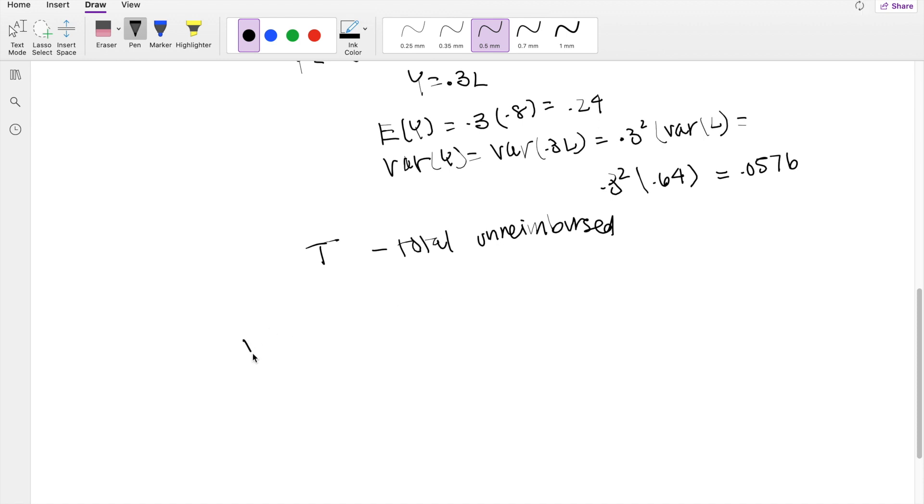So we're looking for the variance of T by the conditional variance formula. We can break this down into the expectation of variance of T given the number of accidents plus the variance of expectation of T given X accidents as well.